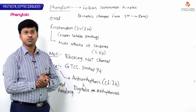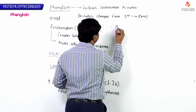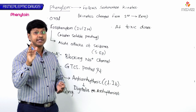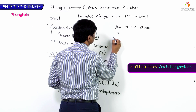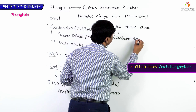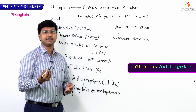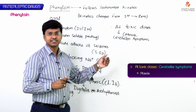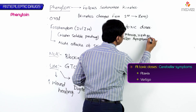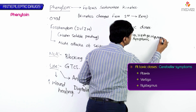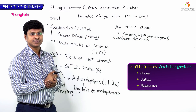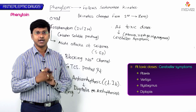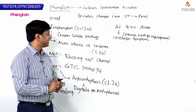At toxic doses, phenytoin can result in cerebellar symptoms including ataxia (imbalance in gait), vertigo, nystagmus, and diplopia.